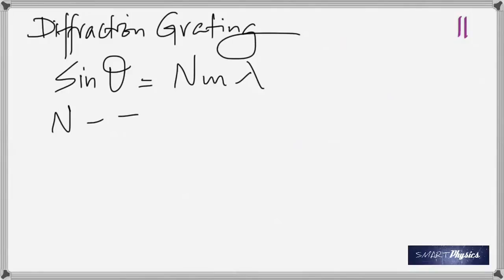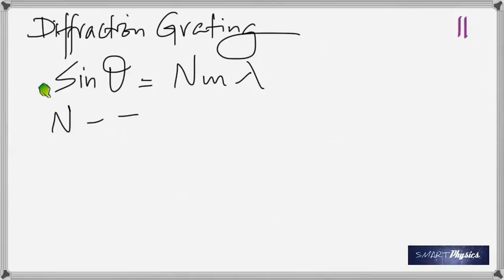The only case where conditions are switched is single-slit diffraction, where the condition for darkness is Mλ. For a grating, it's always interference, so Mλ gives brightness. If the slit width d is given instead of the number of lines, compute N = 1/d to find lines per meter.